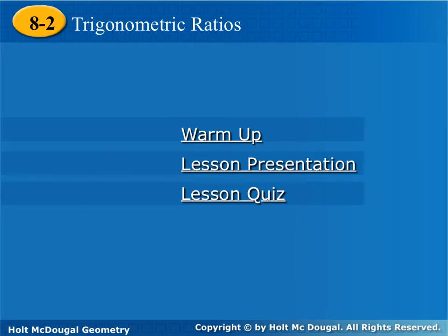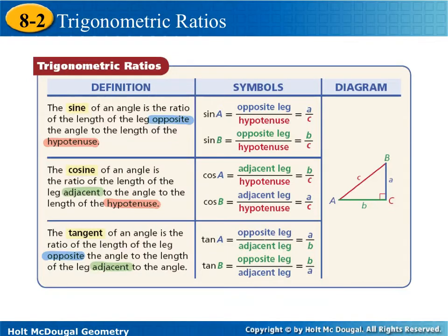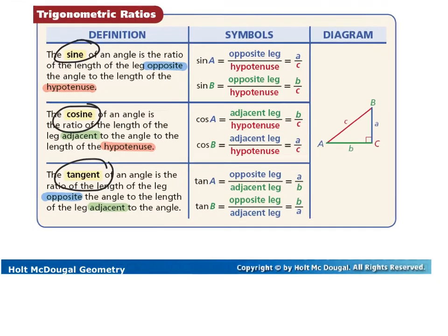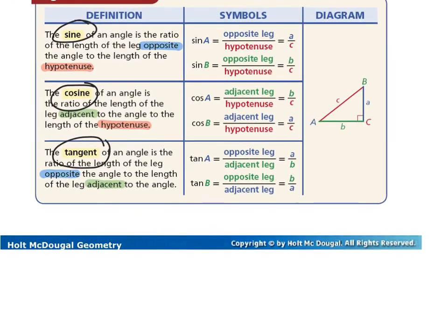Okay, 8.2 — we are going to learn about trigonometric ratios. Our three trig ratios are going to be sine, cosine, and tangent. All of this is a bunch of words, but the most important part is the acronym SOHCAHTOA.